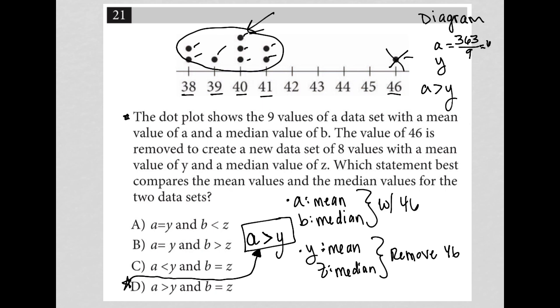For my Y value, I do the exact same thing except I'm not going to have this 46 involved. I could just do 363 minus 46, which is 317, divide that by eight because now I only have eight terms. I'm getting 39.625.